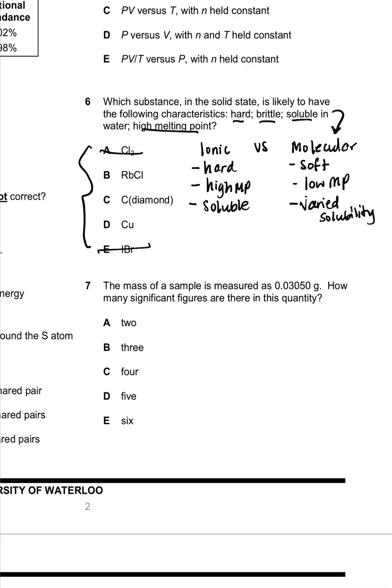because those are molecular compounds made of non-metal elements. I can also eliminate choice C, the diamond. Diamond, although it is a hard solid and does have a high melting point, is not dissolvable in water because it's a covalent network.